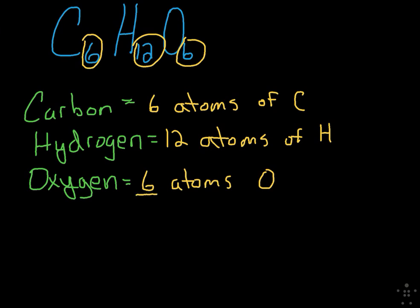Now, if I asked you how many total atoms, it'd be as simple as adding them all up. Six plus twelve plus six is twenty-four atoms total. That's how many total atoms make up the formula for glucose.